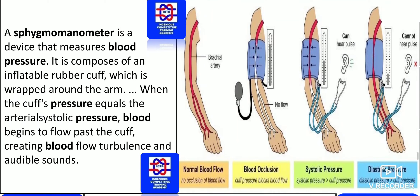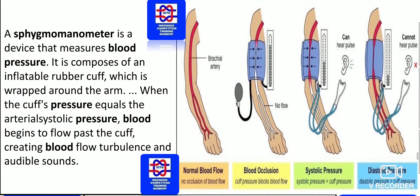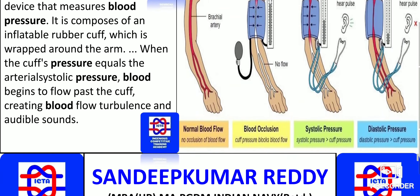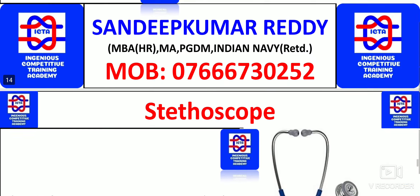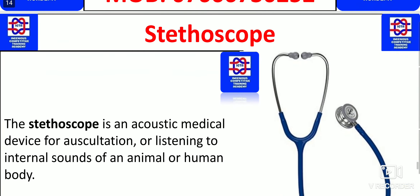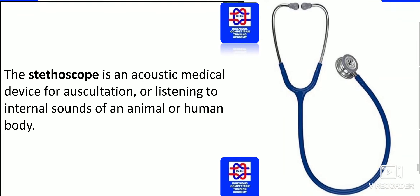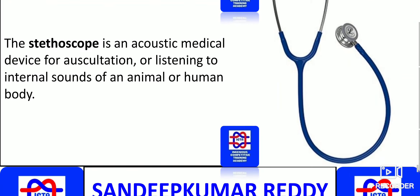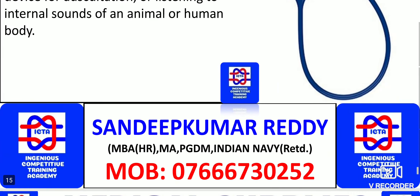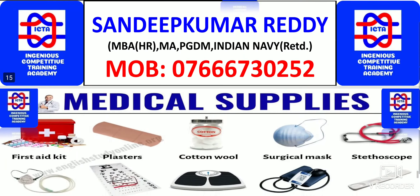Blood pressure — we know that the sphygmomanometer is the one used to identify blood pressure. The systolic-diastolic reading, that is 120 by 80, will be identified. And we have the stethoscope for hearing the breathing as well as the heartbeat.